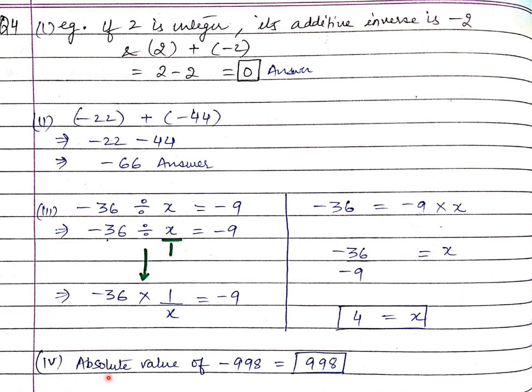Fourth part: absolute value of minus 998. The absolute value of any number is just the number without any negative sign. So here it is minus 998, and the absolute value is 998. If the question was absolute value of minus 3, the answer is plus 3.